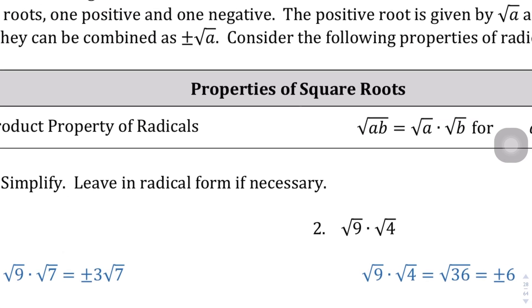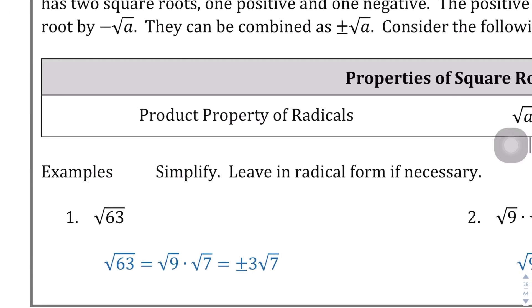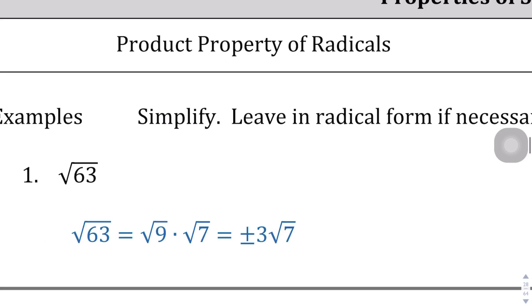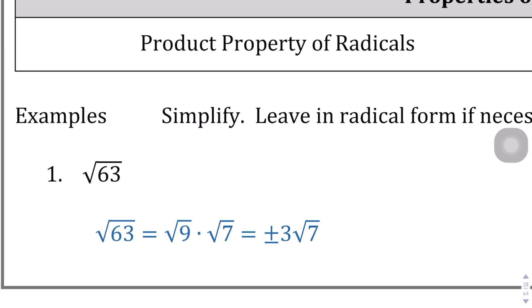I generally try not to read the explore sections because I want you guys to read it. But just so you can see here, one thing I want to point out is that when you're taking the square root of a number — in this case, the square root of 63 — the solution is going to come out to be positive or negative.